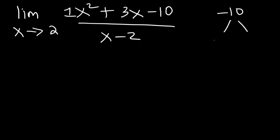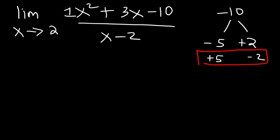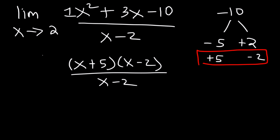Two numbers that multiply to 10 are 5 and 2. We want positive 5 and negative 2, because those add up to positive 3. Therefore x squared plus 3x minus 10 factors as x plus 5 times x minus 2. We rewrite the limit expression and notice that we can cancel the factor x minus 2.